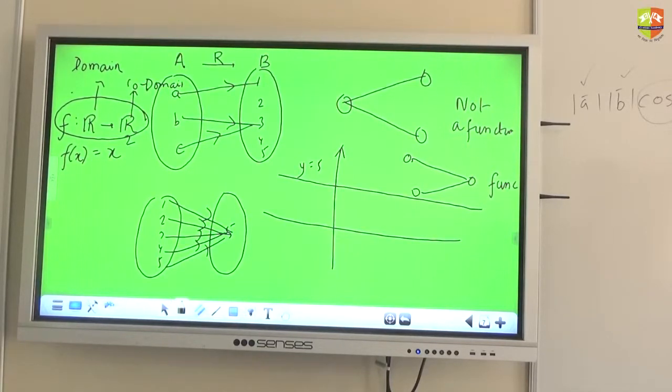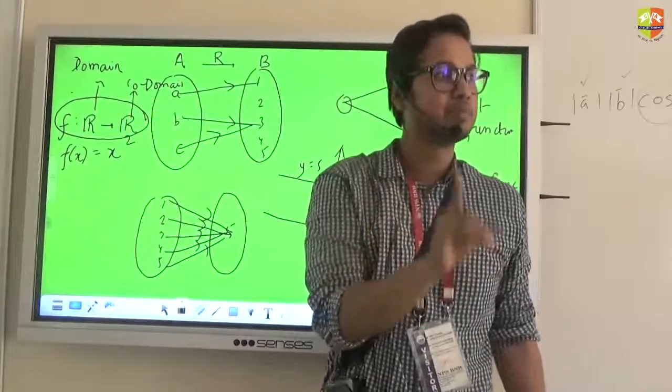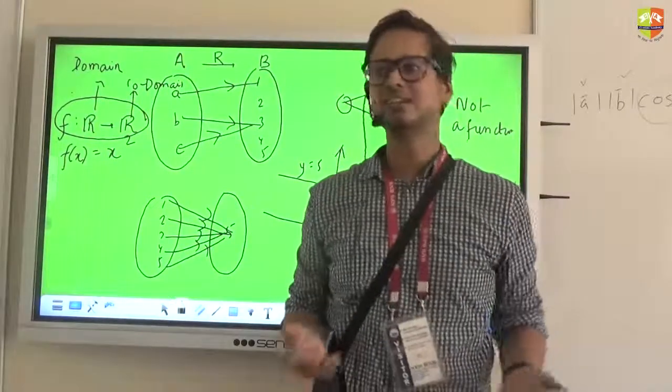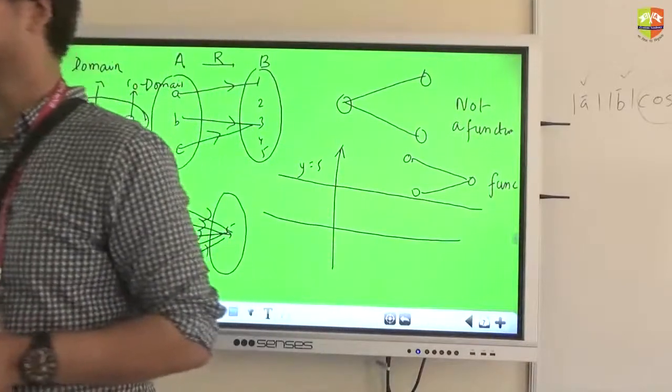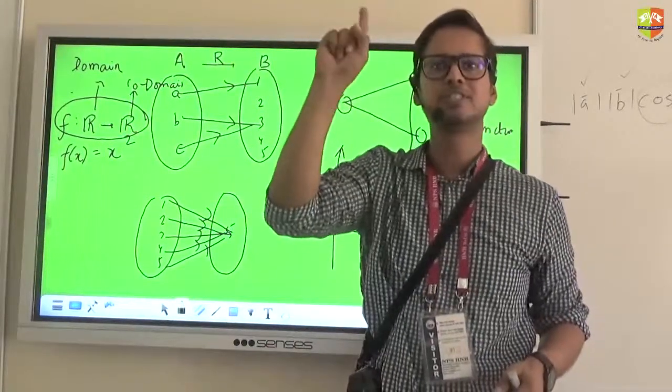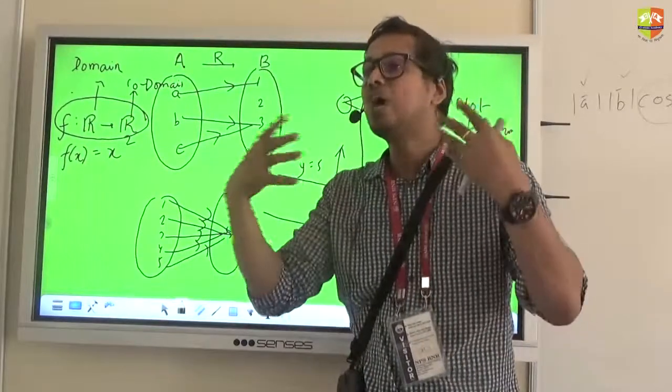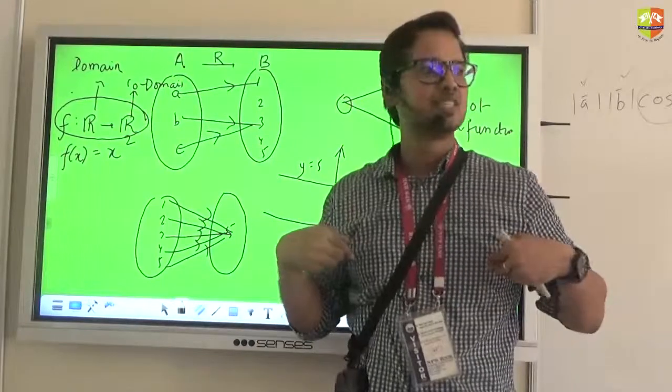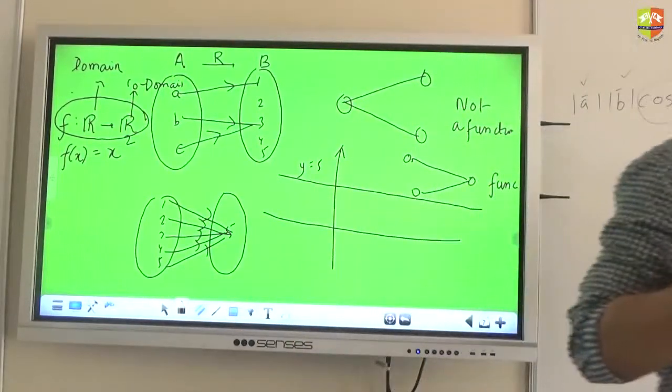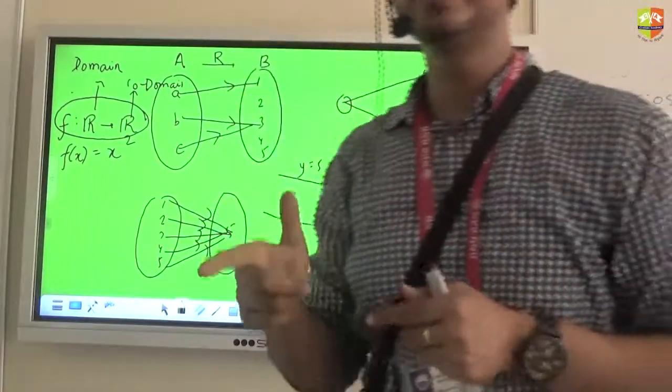So it is not violating that unique characteristic. Unique characteristic means one input should give you one output only. Now that output will match with the output of some other input. That is fine. Understood the difference? Understood the difference? Okay. So a practical example apart from this will be a function like x square. Is this a function in real domain and real codomain?